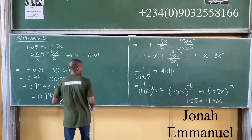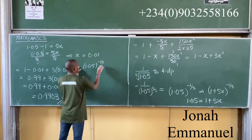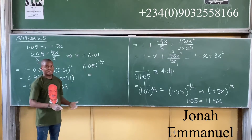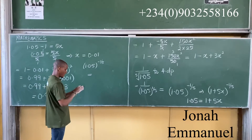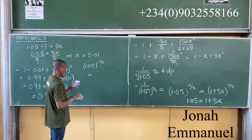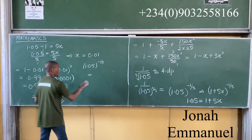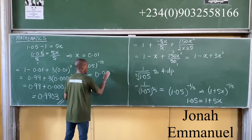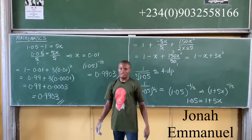Just to confirm this is correct, I will use the calculator to punch 1.05 raised to minus 1/5. The calculator gives 0.9903. That means the answer is correct — 0.9903. This is how you solve problems of this nature.